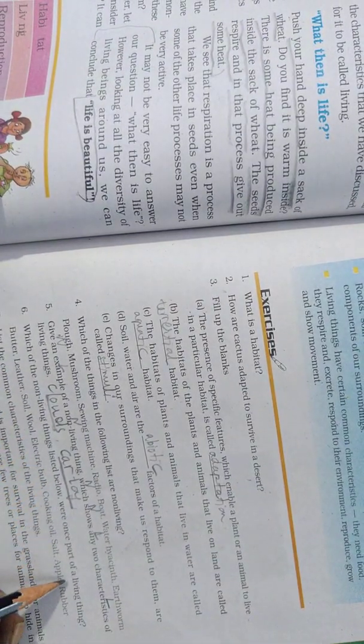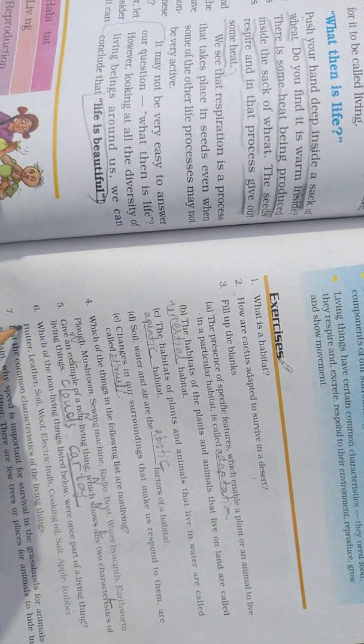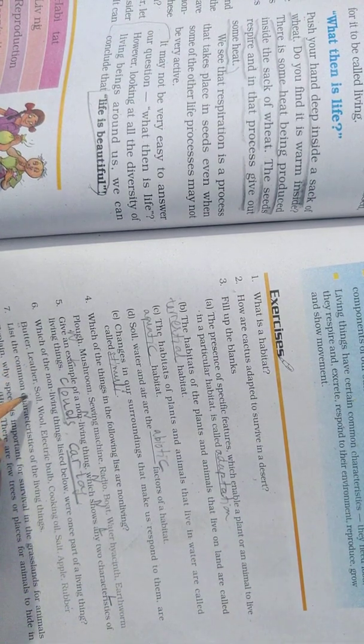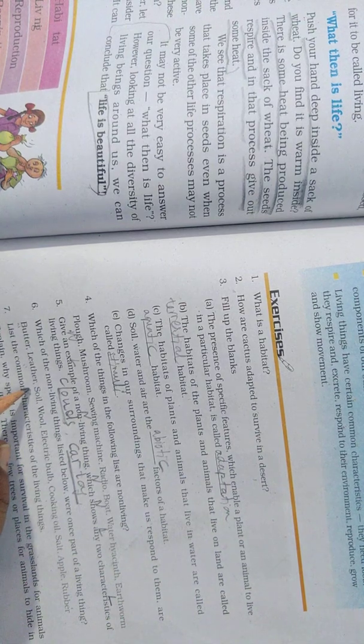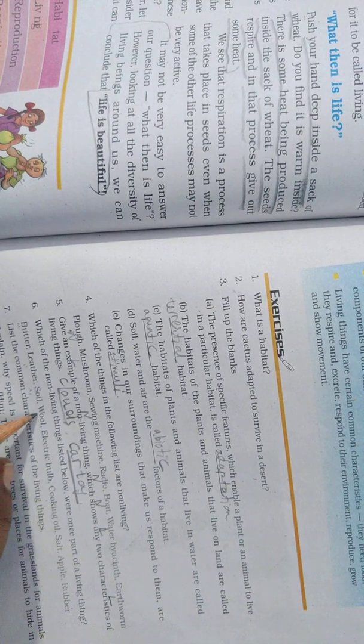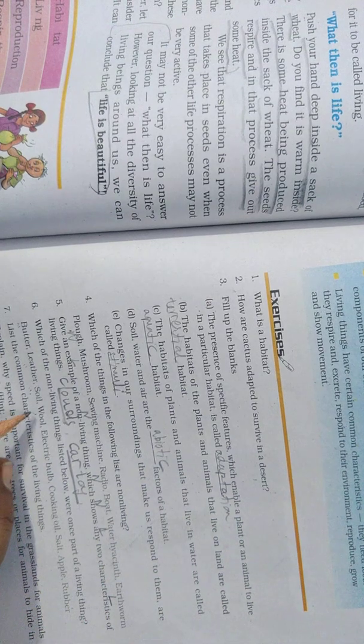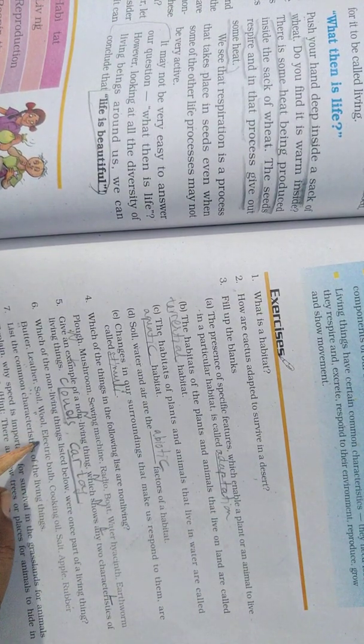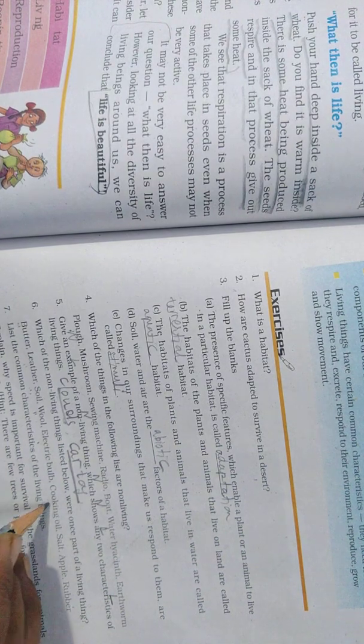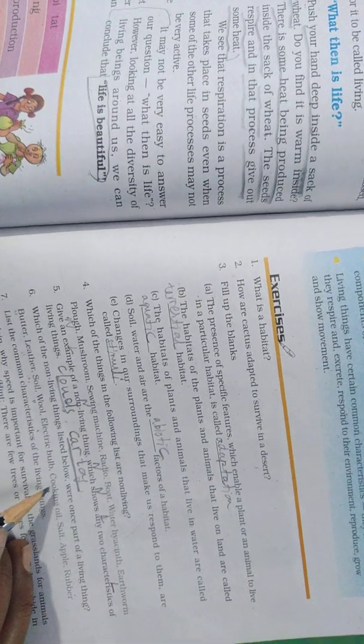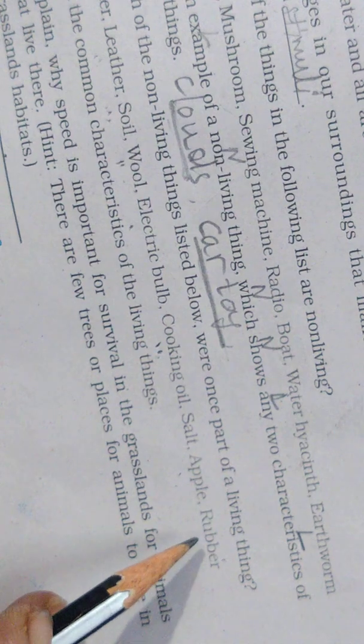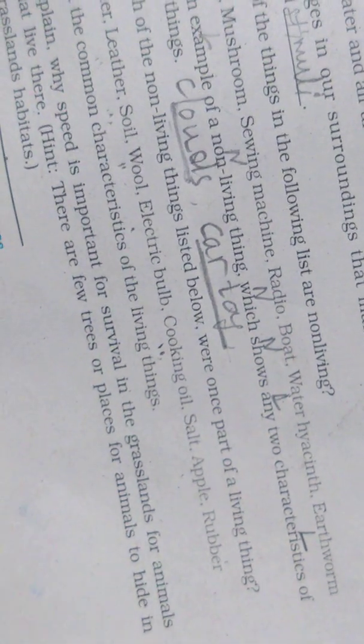Which of the non-living things listed below were once part of living thing? Butter was once part of living thing in the body of cow. Leather was once part of living thing in the body of animal. Soil was also part of living thing because soil is prepared with the help of humus, which is the parts of dead and decaying animals and plants. Wool was also part of living thing, it was the part of the body of sheep or goat. Electric bulb was not any time part of any living thing. Cooking oil was part of living thing because it is prepared from seeds and seeds are living things. Salt was not part of any living thing. Apple was part of living thing. Rubber was also part of living thing because rubber is prepared from the latex coming out from trees.